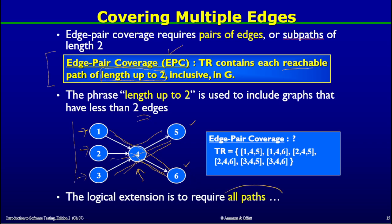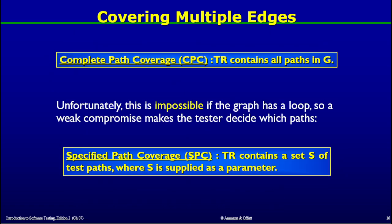The logical extension of this criteria is to require all paths to be covered by our test requirement. That gives rise to the definition of Complete Path Coverage, or CPC, which defines that the test requirement contains all paths in graph G. Now this looks simple.